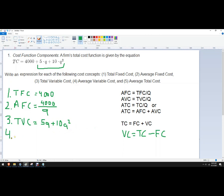And then number four, average variable cost. So that's this expression divided by Q. So here I'll write it out.